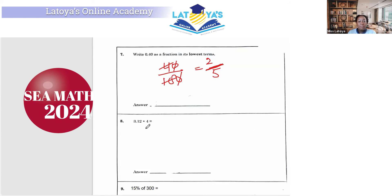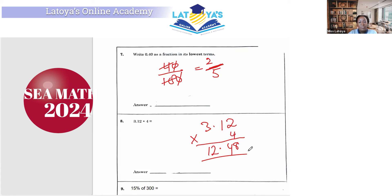Question 8 wants us to multiply 3.12 by 4. 2 fours are 8, 4 ones are 4. Put back your point. 4 threes are 12. So we are getting 12.48.